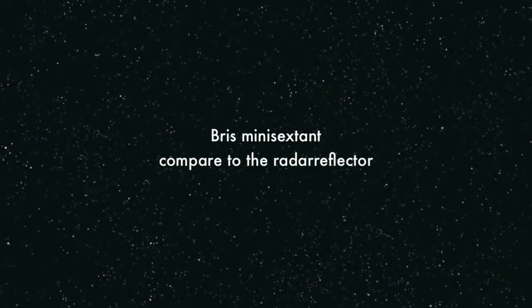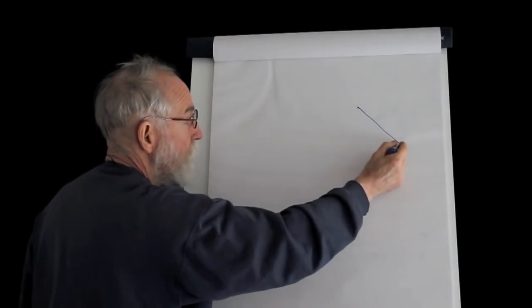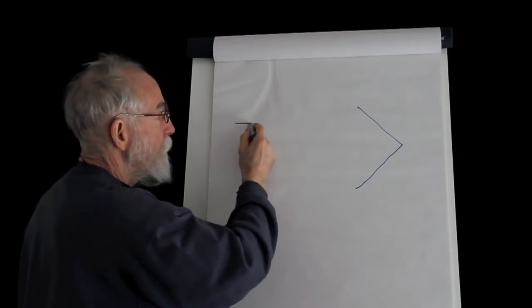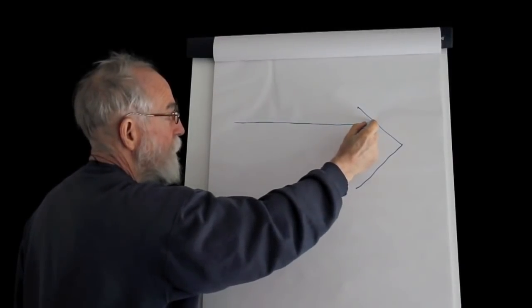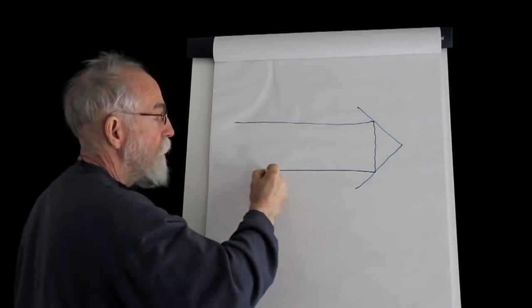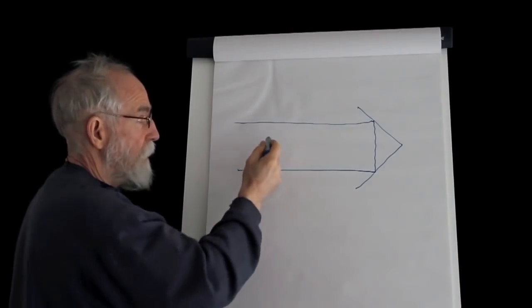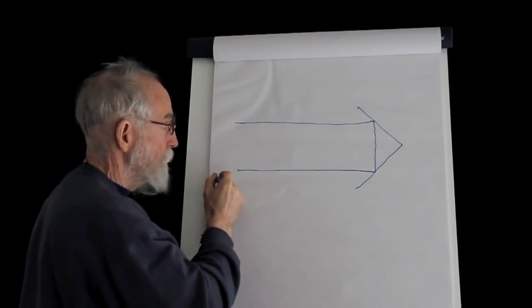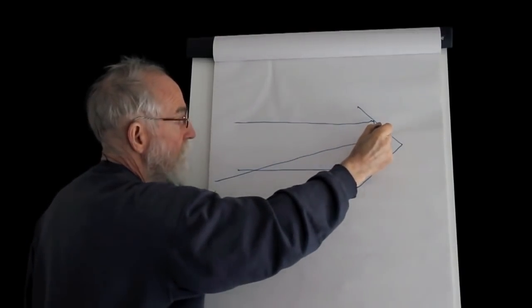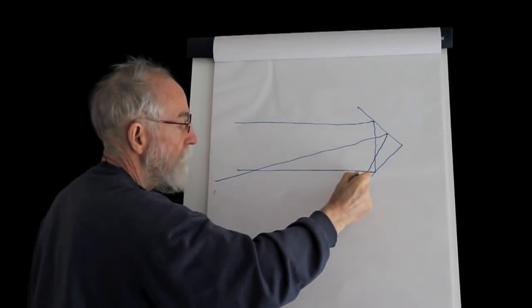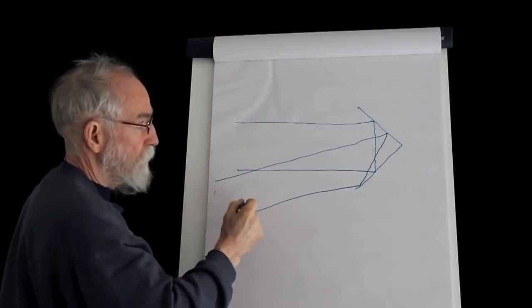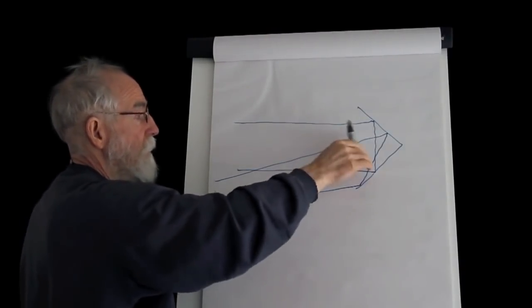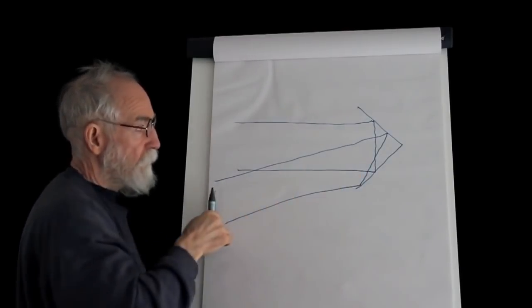Other optical instruments, like the radar reflector, use the same principles. If a ray comes in here, it's reflected down here, and the ray comes out parallel. For example, if the ray comes in from here, goes out here, and is reflected here, down here, and comes out also parallel. So whatever angle you hit the radar reflector, it always comes back to you.